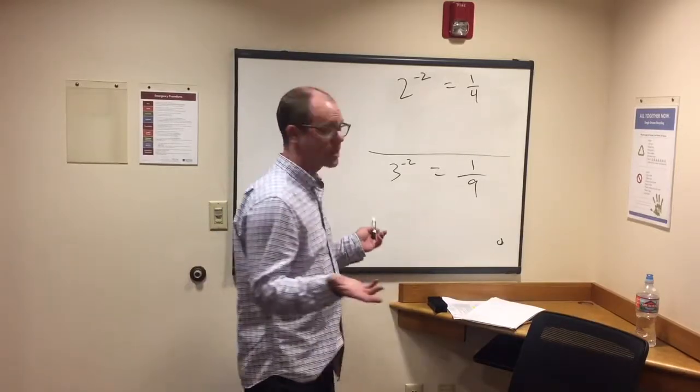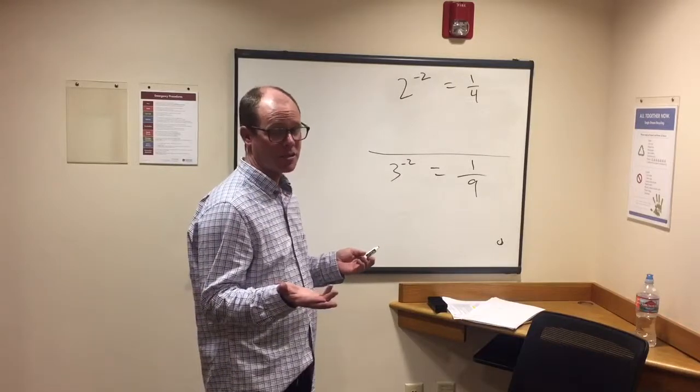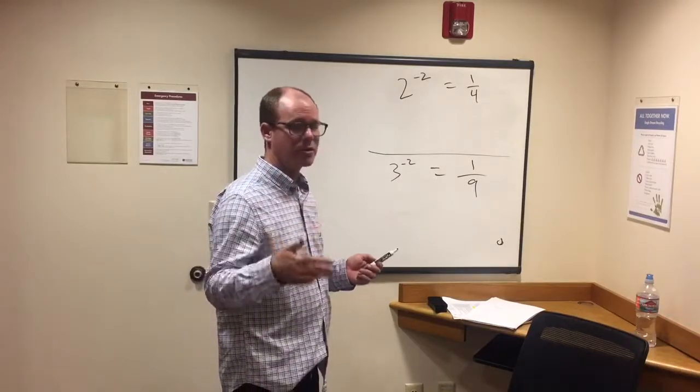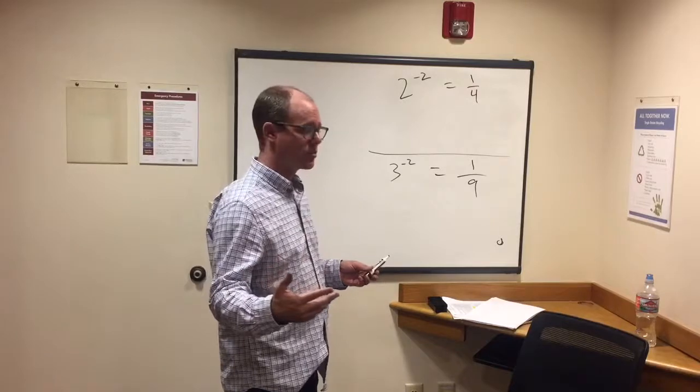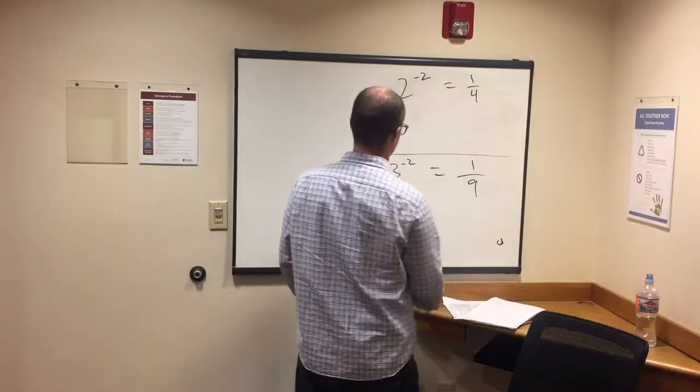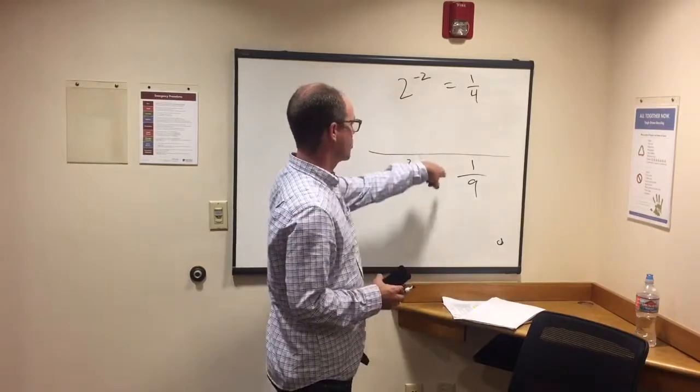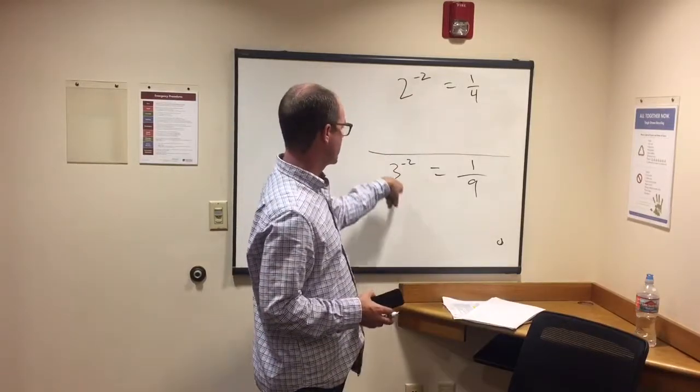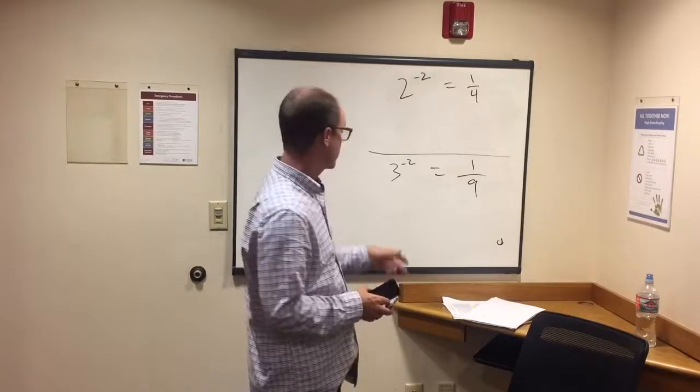It's that simple. If it was three to the negative three, let's say, three to the third is 27, three times three is nine, nine times three is 27, you can put a one on top of it. You get one over 27. So that's how you do negative exponents. Put a one on top of it, and then put the denominator just what the normal answer would be.